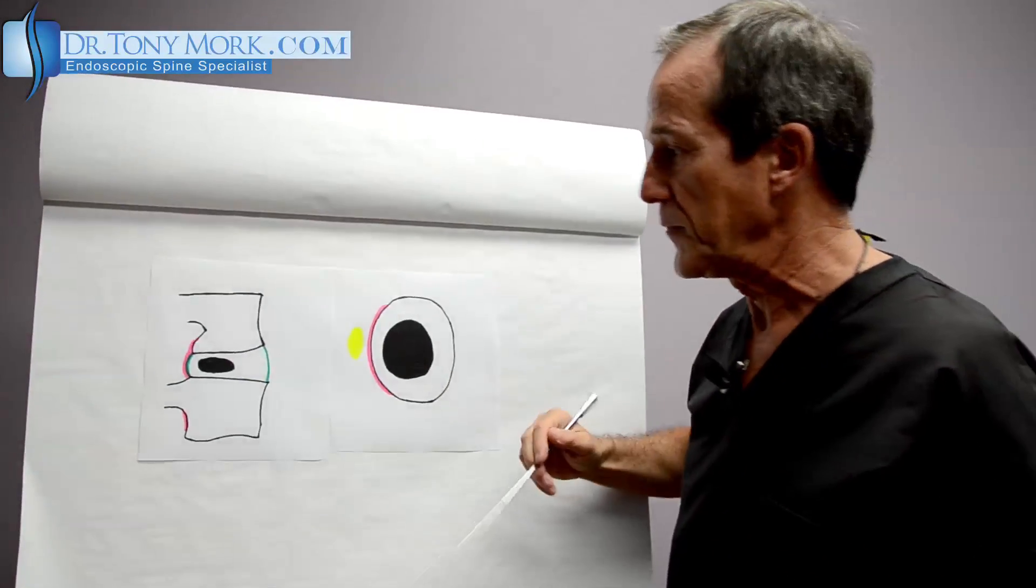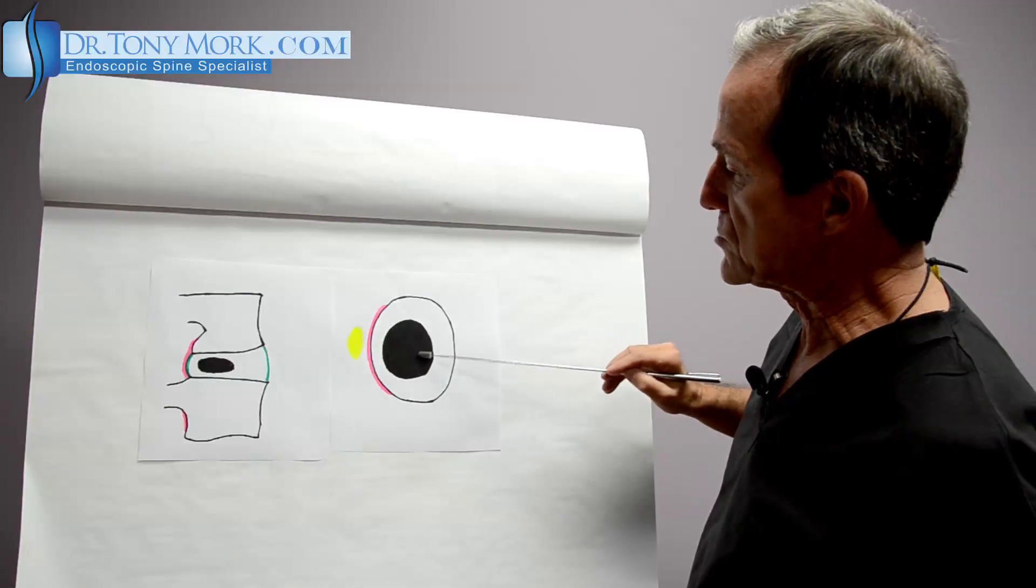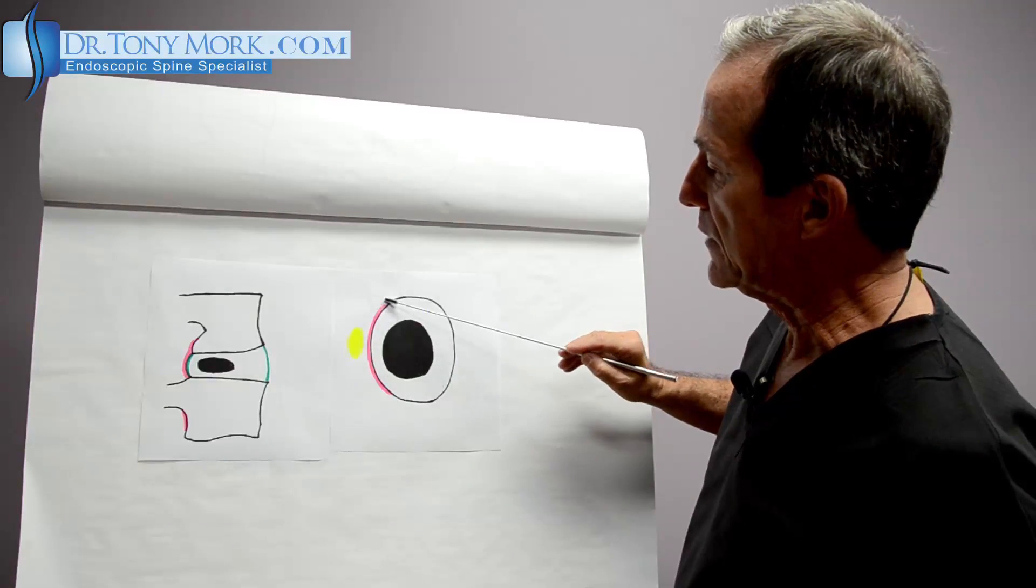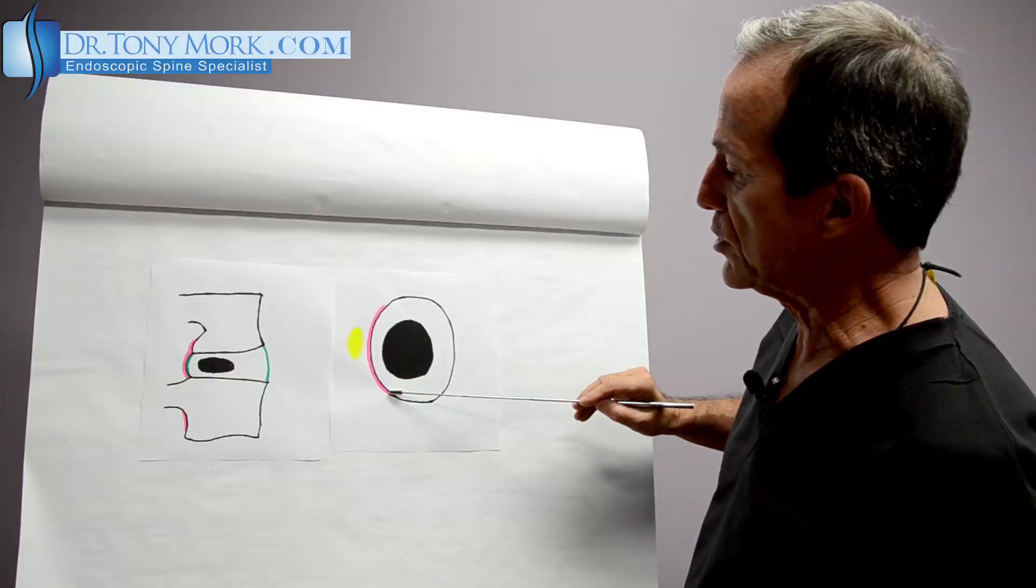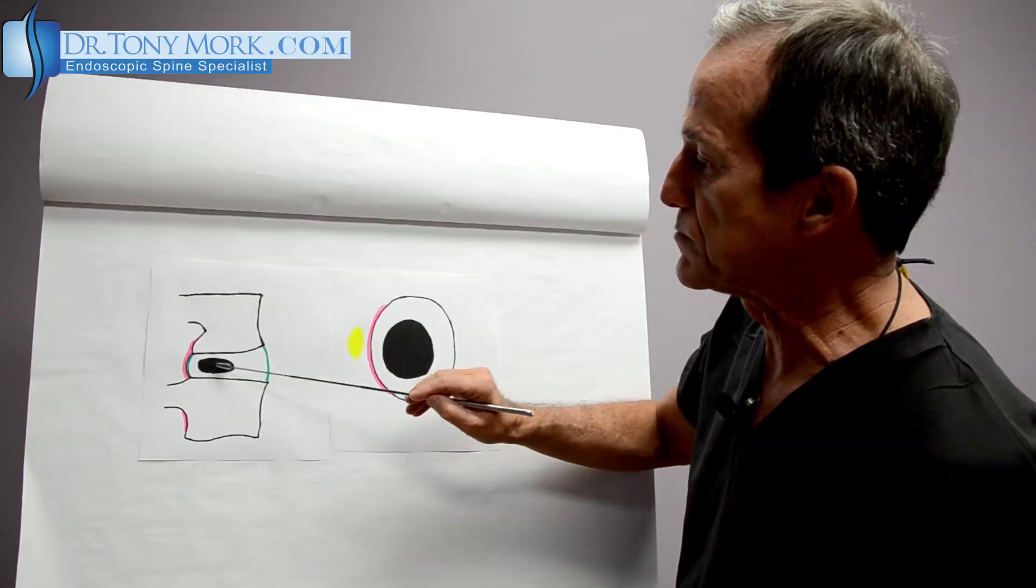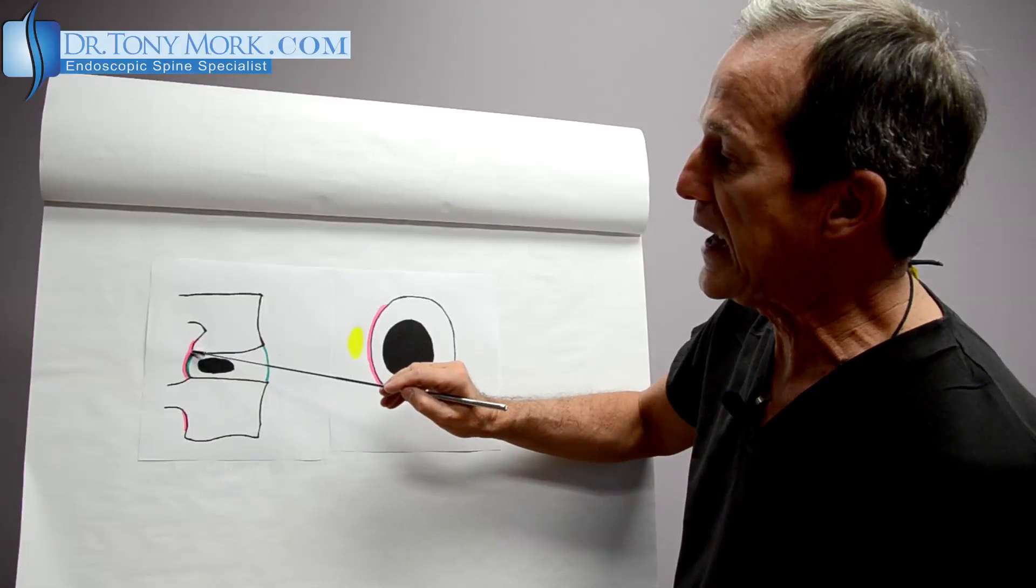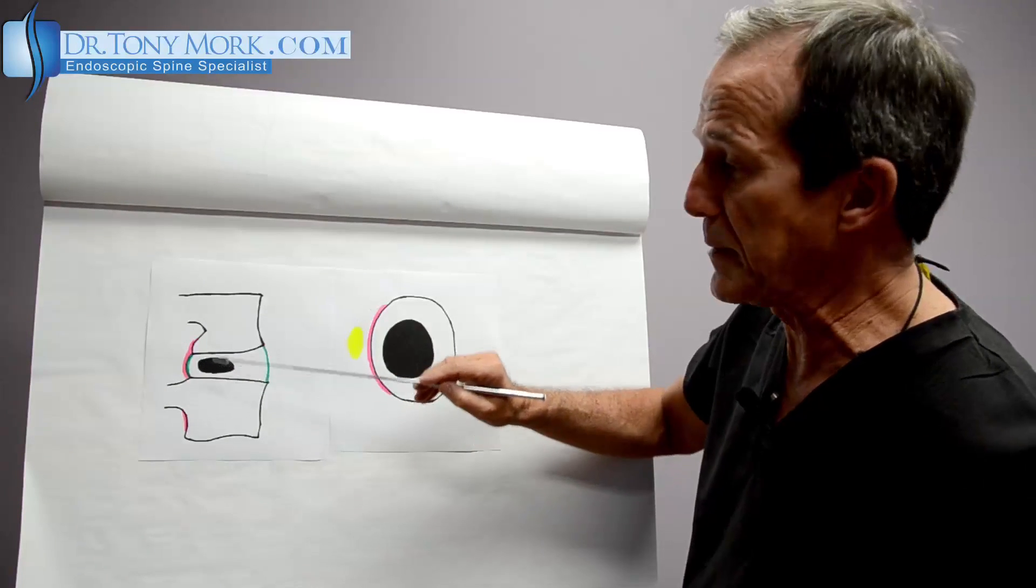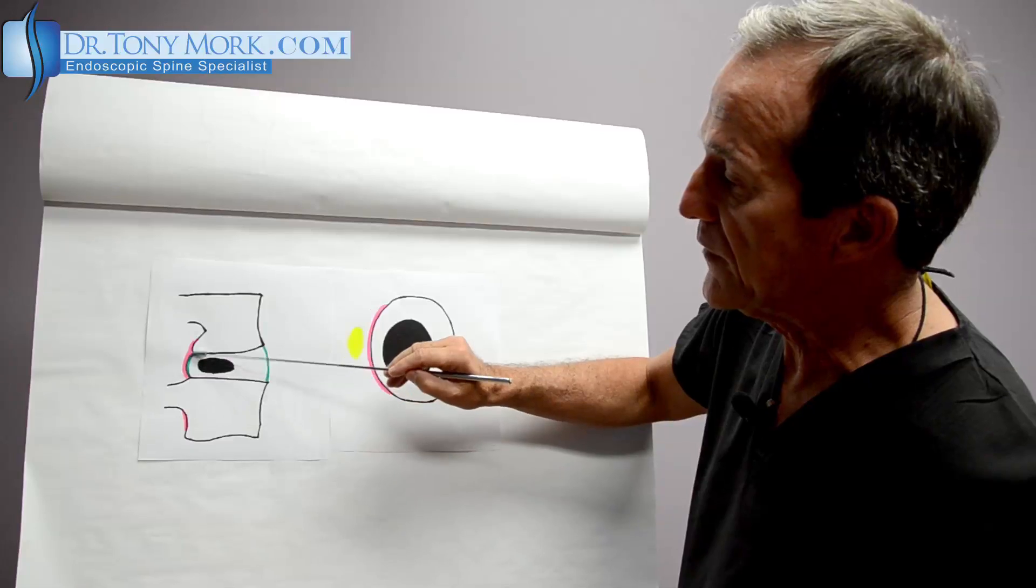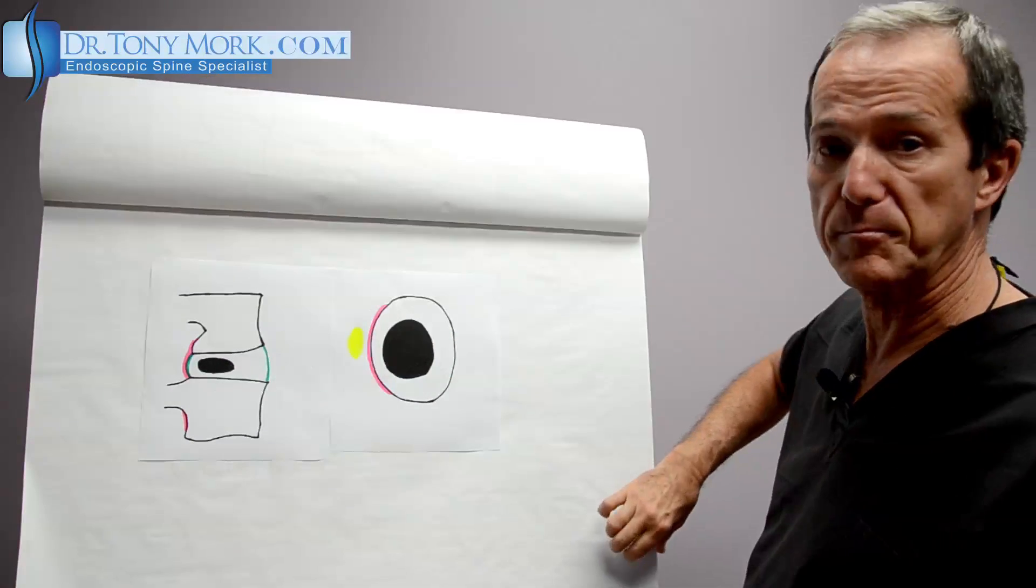In this case, we've got a bulge and we can see that the bulge, now the nucleus has pushed backward a little bit. There's the pink is the posterior longitudinal ligament and there's the spinal cord. You can see here that the nucleus is pushing backward and it's expanding the edge of the annulus and the posterior longitudinal ligament beyond the edge of the vertebral bones. That's a bulge.